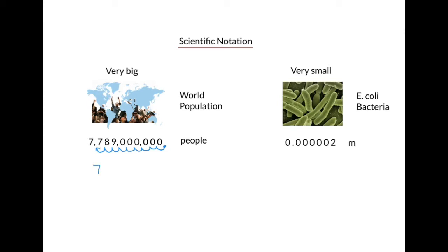Then we write only the non-zero digits with the decimal between the first two and then multiply by a power of ten with the exponent being the number of times we move the decimal. In our case, nine places to the left.